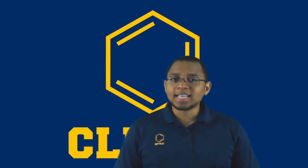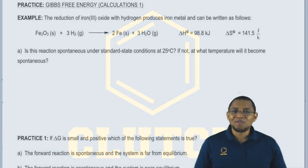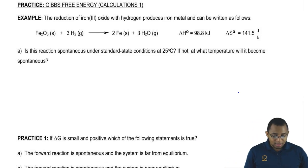Hey guys, in this new video, we're going to take a look at the calculations behind Gibbs Free Energy. If we take a look at example 1, it says, the reduction of iron 3 oxide with hydrogen produces iron metal and can be written as follows.